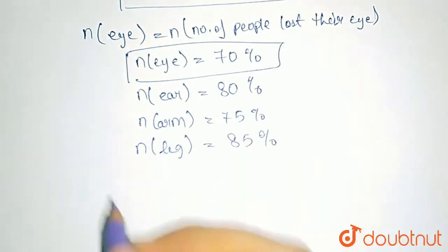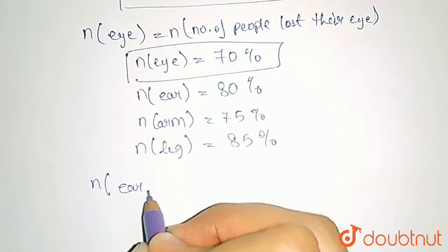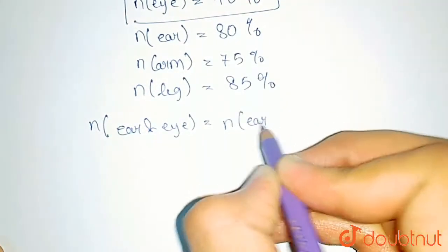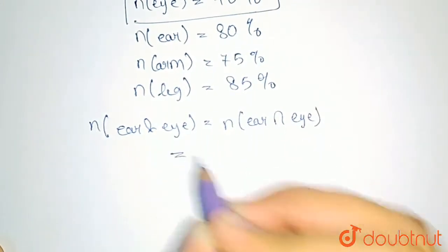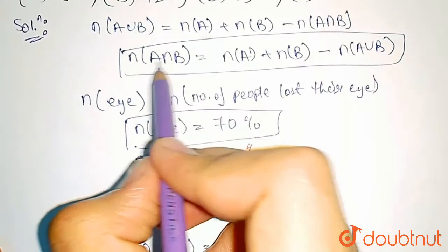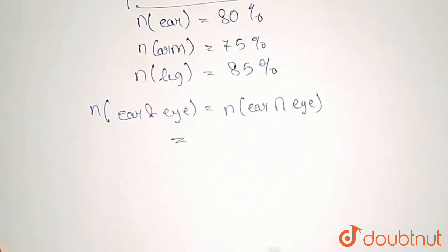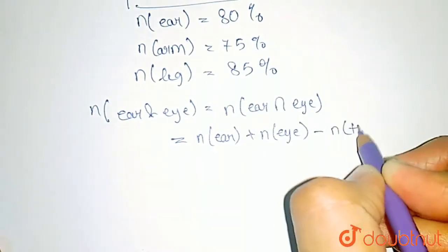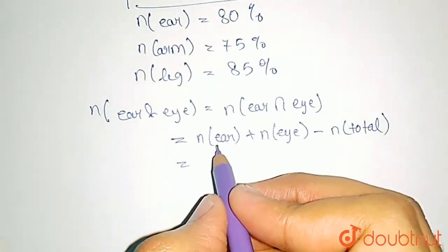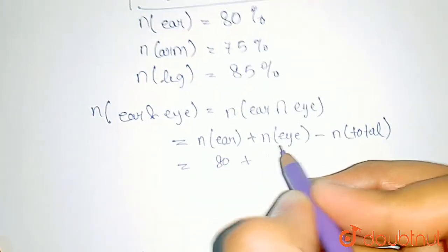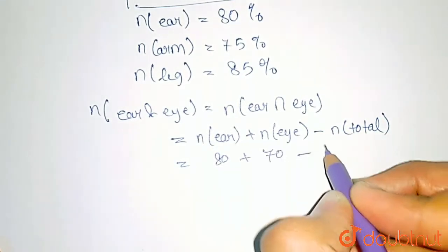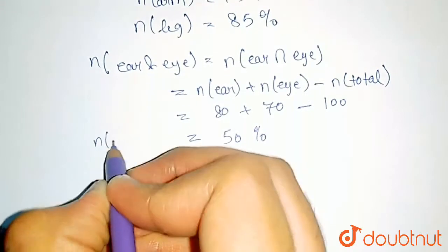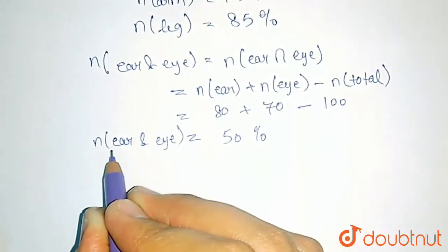Let us identify the number of people who lost both ear and eye. This can be written as N(ear intersection eye). Using the formula N(A intersection B) = N(A) + N(B) - N(A union B), this equals number who lost ear plus number who lost eye minus total: 80 + 70 - 100 = 50%. So 50% lost both ear and eye.